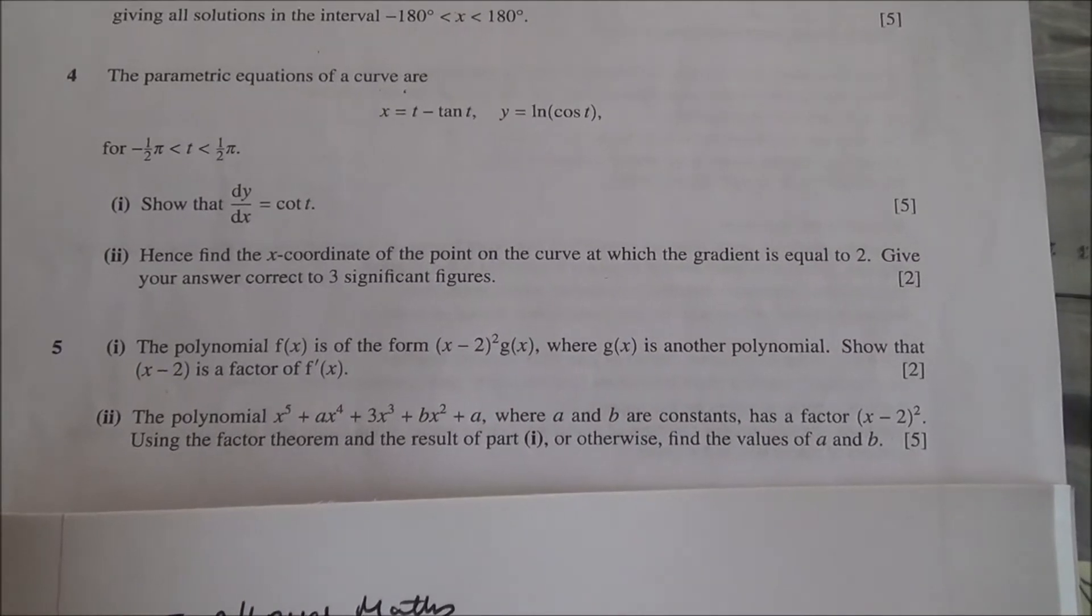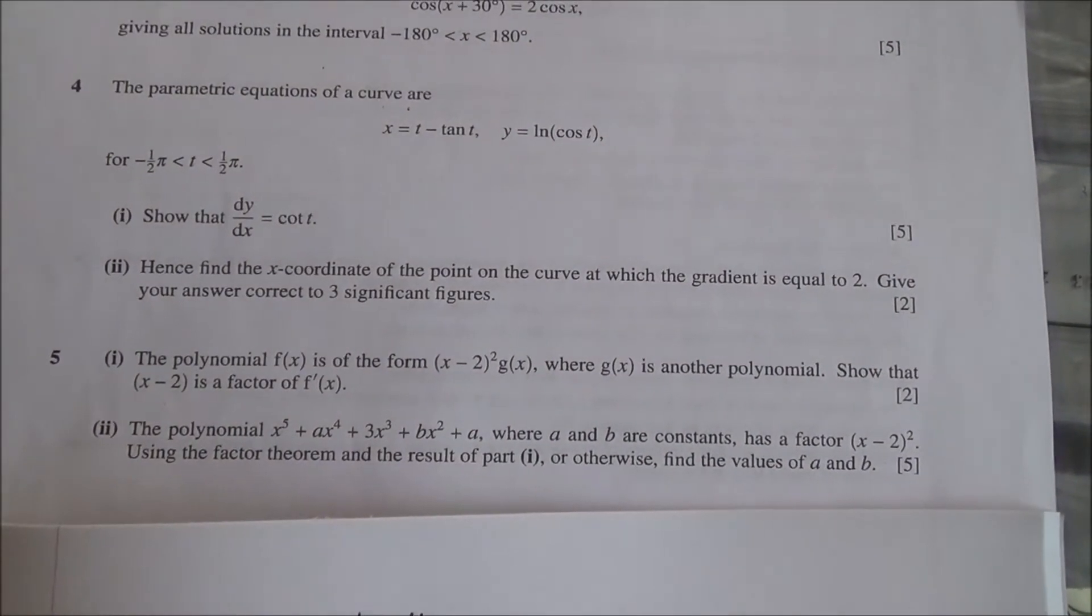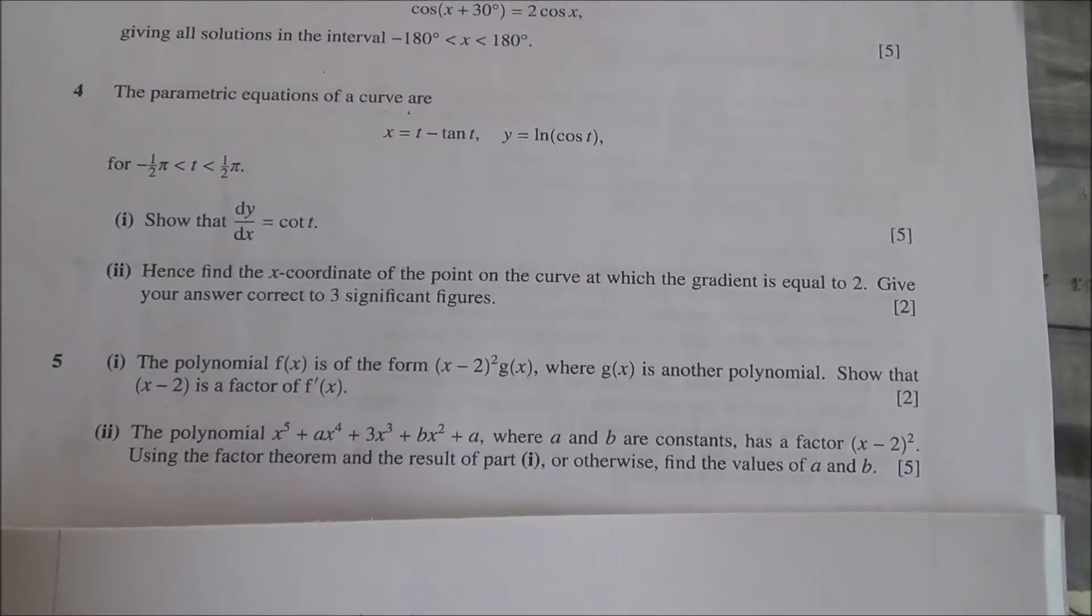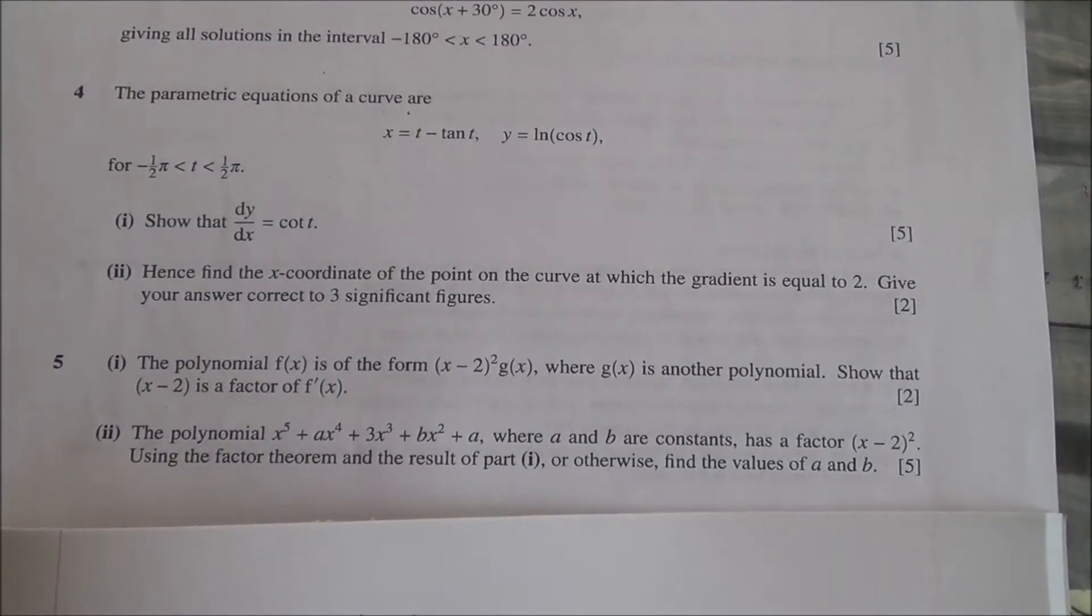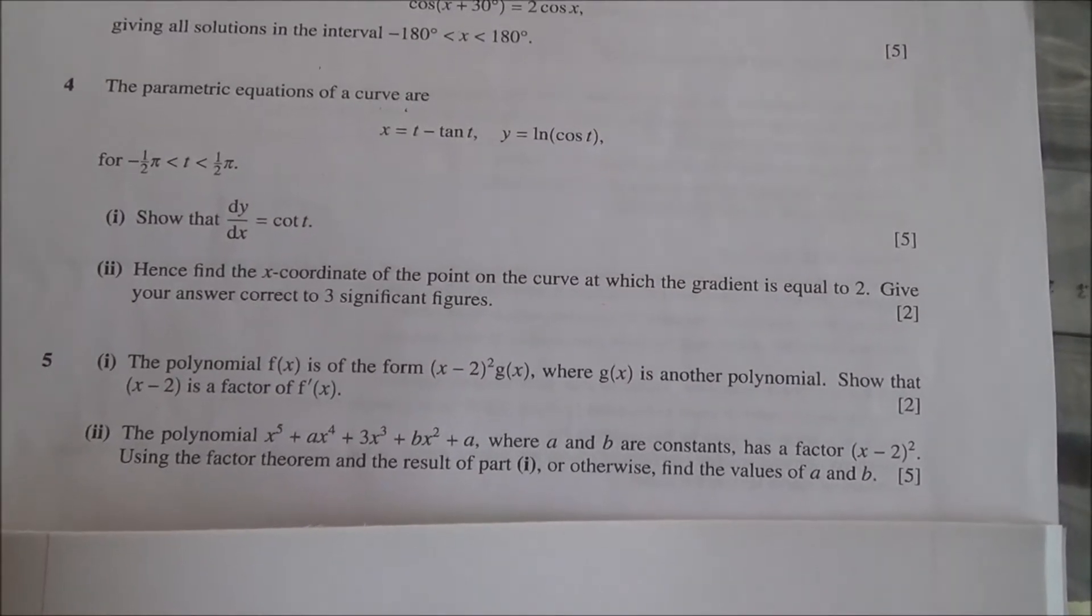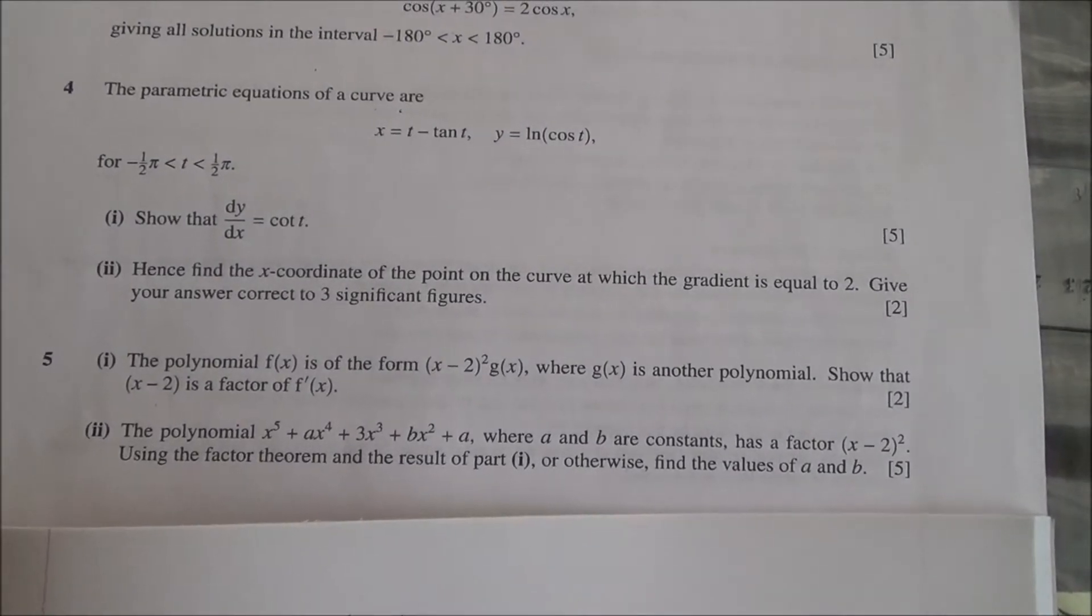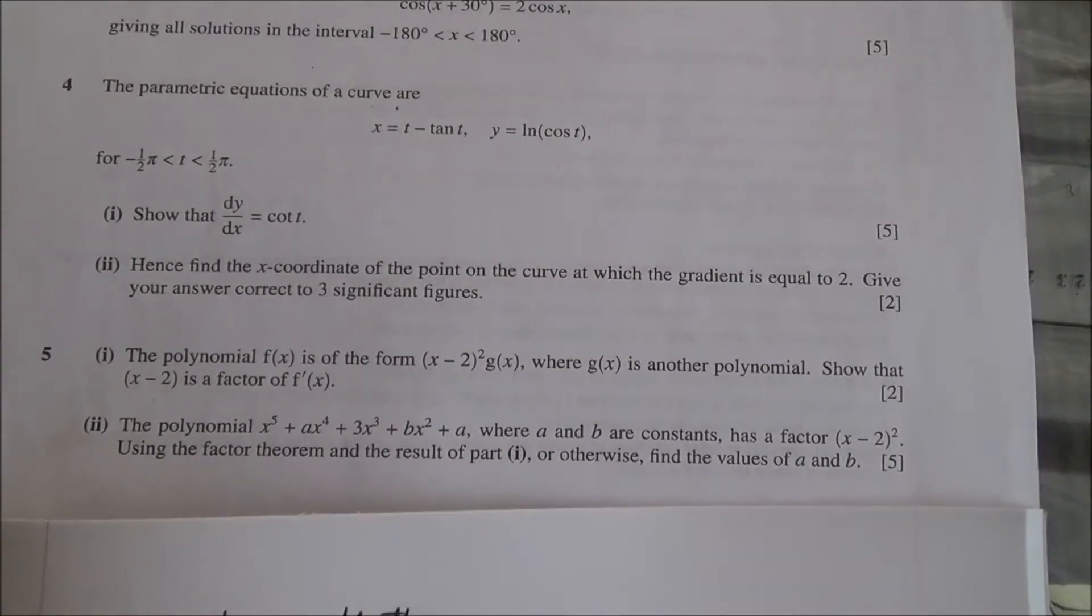Show that (x-2) is a factor of f'(x). And for the second part, the polynomial x⁵ + ax⁴ + 3x³ + bx² + a, where a and b are constants, has a factor of (x-2)² using the factor theorem and the result of part 1, or otherwise find the values of a and b.